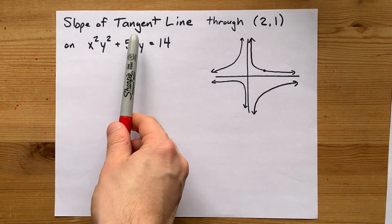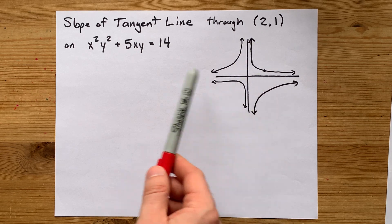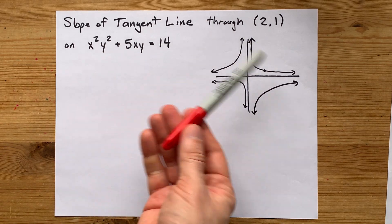What is the slope of the tangent line through a point, the point 2 comma 1 in this case, on some complicated curve?